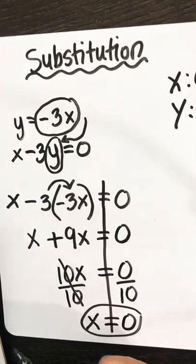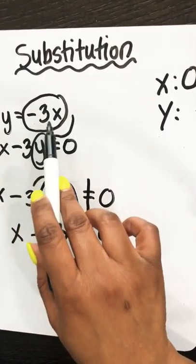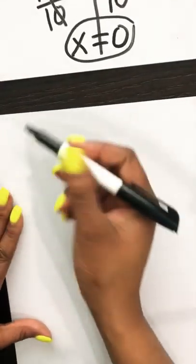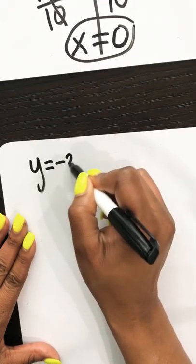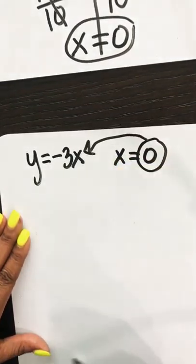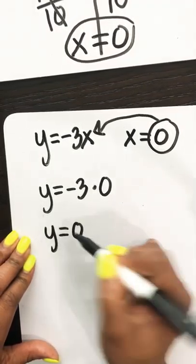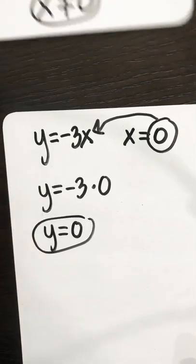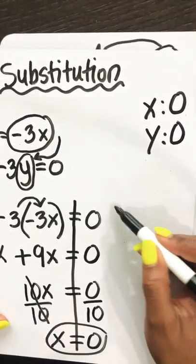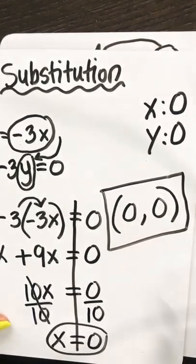We're going to do some more substitution, but we have a bit more information to help us. To find y, we use the equation y equals negative 3x, and we know x is 0. So we substitute 0 for x: y equals negative 3 times 0, which equals 0. We've now found y equals 0. So x is 0 and y is 0, and we write our solution as (0, 0).